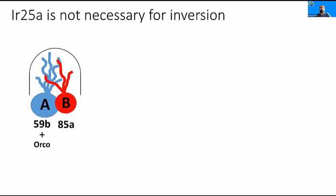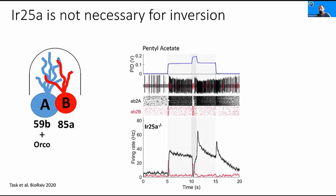Fourth, the inverting neuron AB2A expresses OR59B along with the obligate co-receptor ORCO. It was recently shown that another receptor, IR25A, is also expressed in this neuron. If the phenomenon is mediated by odor binding to OR59B and IR25A, with those receptors having activating and inhibitory properties, maybe this is the cause. However, deleting IR25A genetically doesn't eliminate the inversion, suggesting the phenomenon is directly mediated by OR59B itself — it doesn't require another receptor.